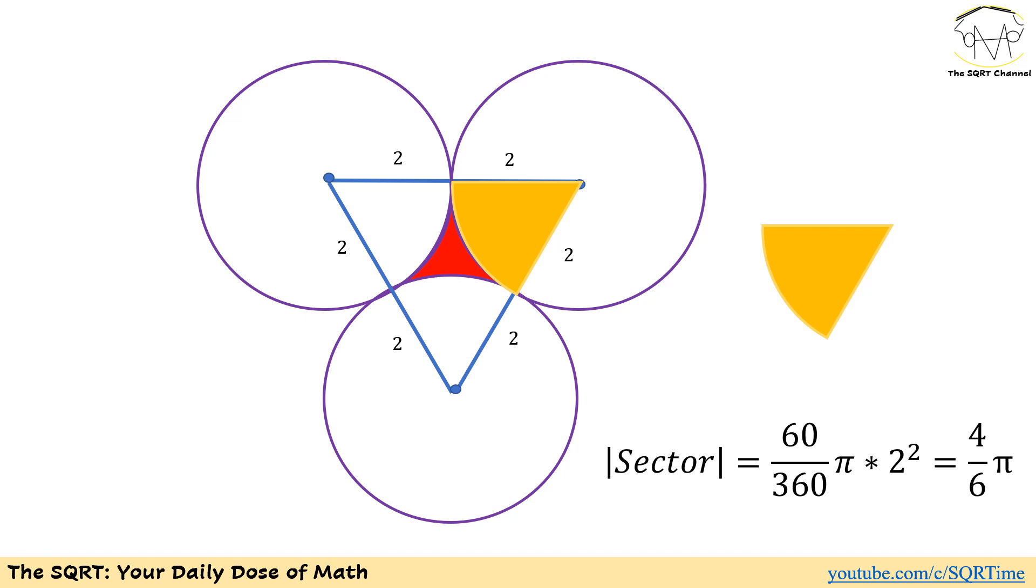Since we have an equilateral triangle, the area that we have can be calculated as 60 over 360 times the area of the circle which is pi times the radius of the circle to the power of 2. If we replace the radius which is 2, we are going to end up with 4 over 6 times pi.